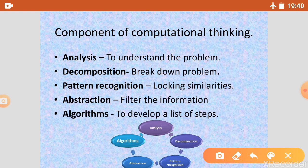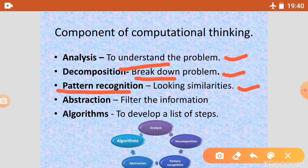To recap: first is Analysis — we understand the problem. Second is Decomposition — we break down the problem into small parts. Third is Pattern Recognition — we find the similarities. Fourth is Abstraction — we filter the information. Fifth is Algorithm — we create a list of steps. We will now discuss each in detail.